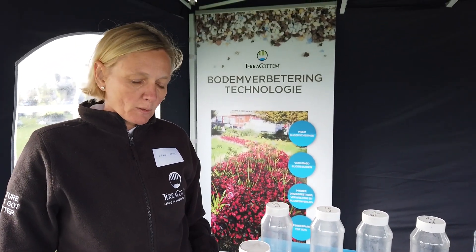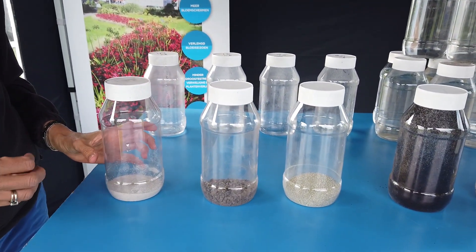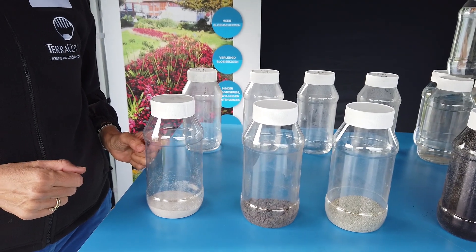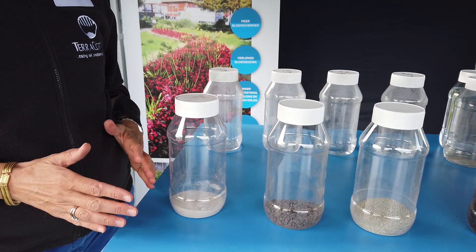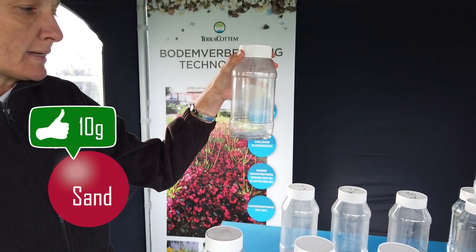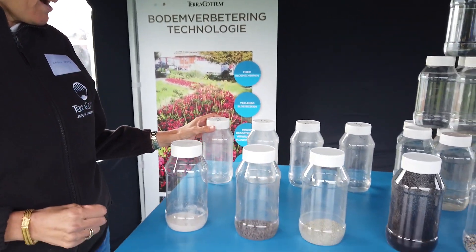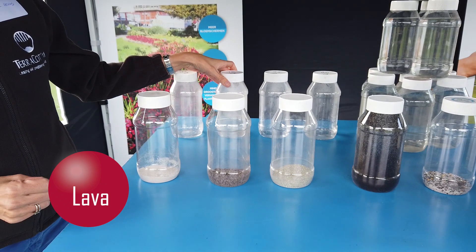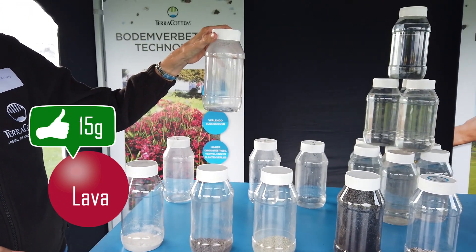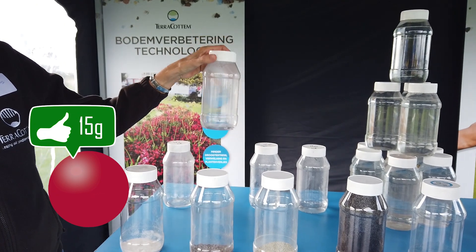For example, if we saturate 100 grams of sand, after saturation those 100 grams will weigh 110 grams, meaning that 100 grams of sand can hold 10 milliliters or 10 grams of water. Lava, which is also a very porous material, can absorb 15 milliliters of water per 100 grams.